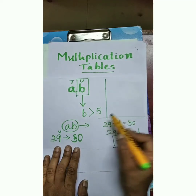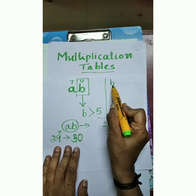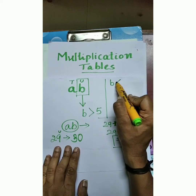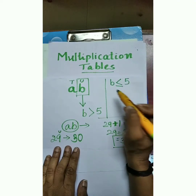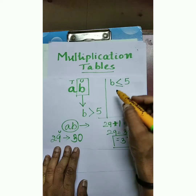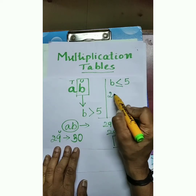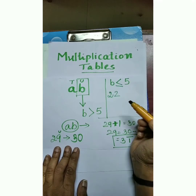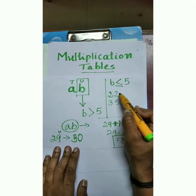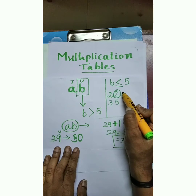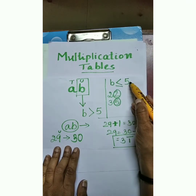Suppose the unit place digit is less than or equal to 5 — do not convert that number to vinculum form. For example, 22 or 35: here the unit place is 2, which is less than 5, and here the unit place is 5, which is equal to 5.